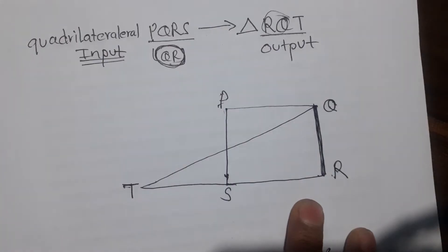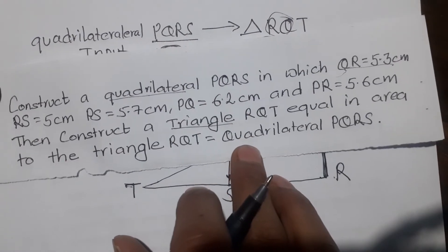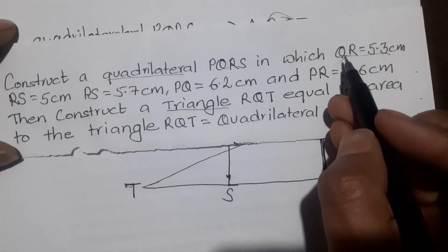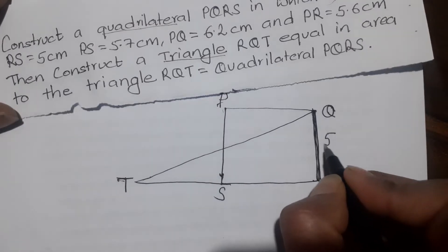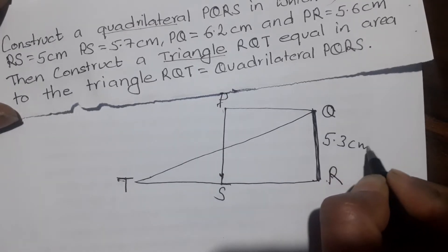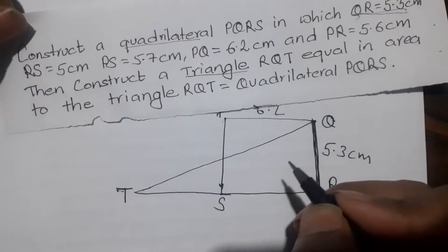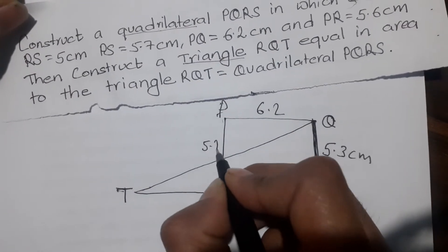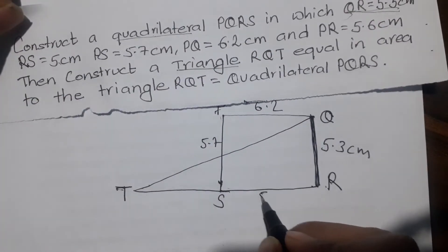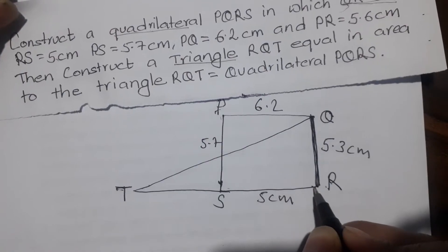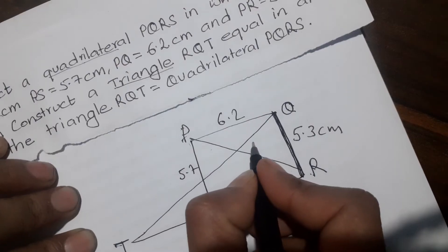Now this is the question. The side measurements are: QR is 5.3 cm, PQ is 6.2 cm, PS is 5.7 cm, SR is 5 cm, and PR is 5.6 cm. So these are the measurements for the quadrilateral.